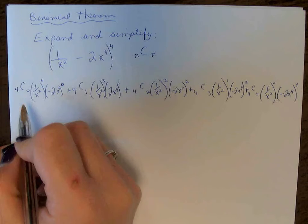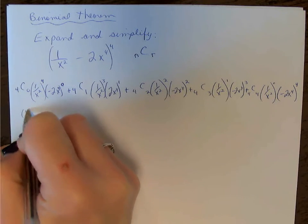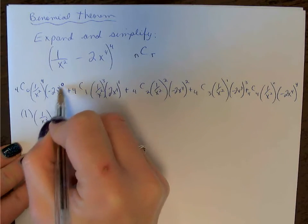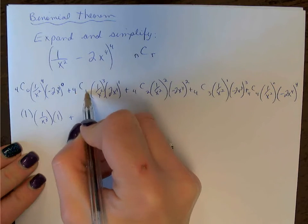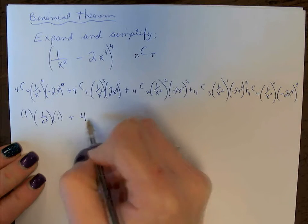So 4C0 is 1. We can replace that with 1 times 1 to the 4 is 1, x to the 8. Anything to the exponent 0 is 1. Remember, 4C1, if the r value is 1, the n value is the answer,